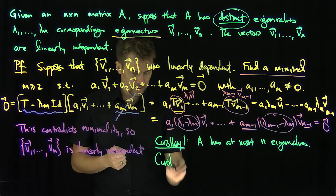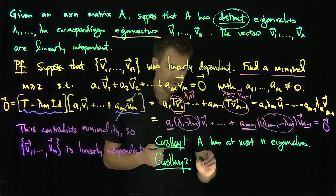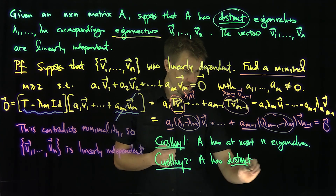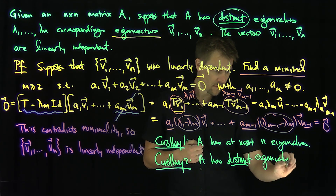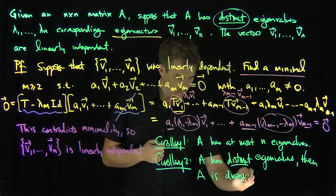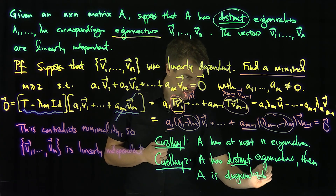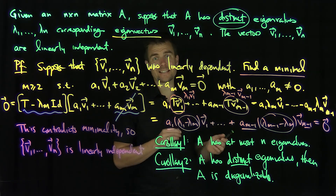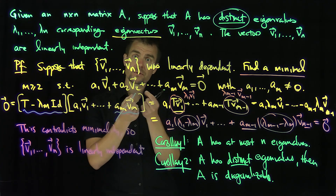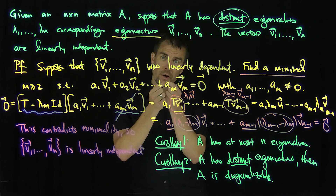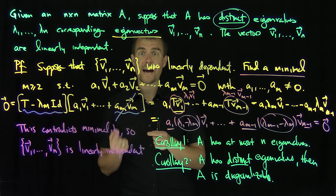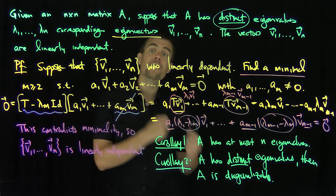Corollary two is even more important: if A has distinct eigenvalues, then A is diagonalizable. Because the eigenvectors are linearly independent, the eigenvector matrix — whose columns are the eigenvectors — is invertible. That invertible matrix is a similarity transform to a diagonal matrix, which proves A is diagonalizable.